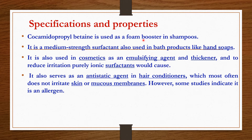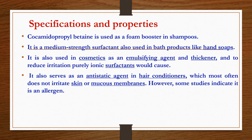CAPB is used as a foam booster in shampoos; it is a medium-strength surfactant also used in bath products like hand soaps. It is used in cosmetics as an emulsifying agent and thickener, and to reduce irritation that purely ionic surfactants would cause. It also serves as an anti-static agent in hair conditioners and most often does not irritate skin or mucous membranes. However, some studies indicate it as an allergen, so we cannot say CAPB is entirely non-allergenic.